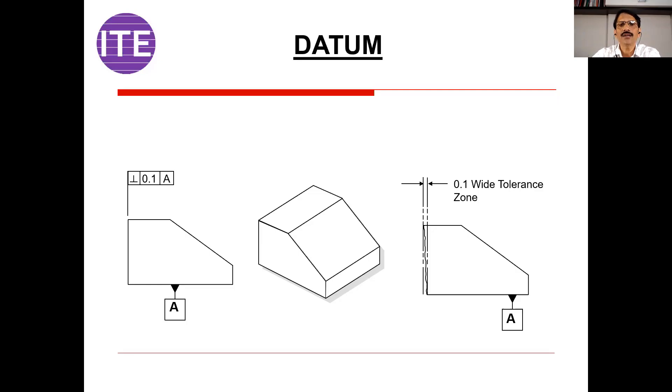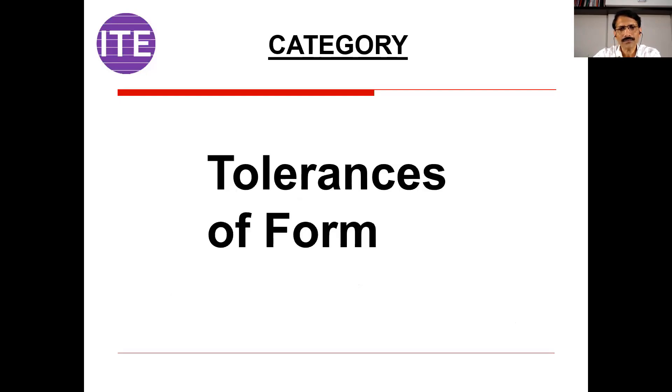Let us understand various characteristics and categories. First is tolerances of form. There are various categories: form category, orientation, location, run out, and profile. These are the main five categories in GD&T. One by one, we are going to understand all the characteristics and categories. At the same time, we have to understand when you are providing a particular characteristic, what are the various agencies also working together.